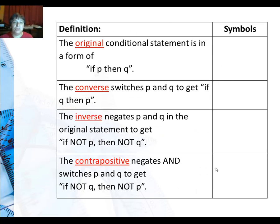So the original conditional statement is always in the form if P then Q. That's what we started with. The converse all it does is it switches P and Q, so now it's if Q then P. The inverse keeps the same order but it puts the NOTs in, so if not P then not Q. And then the contrapositive does both. It switches and negates, so if not Q then not P.